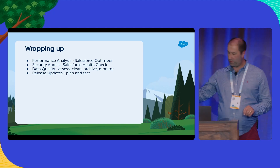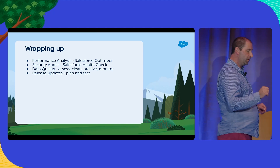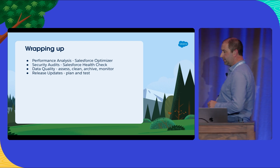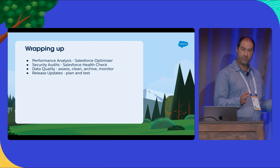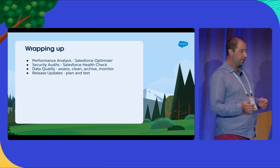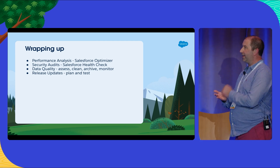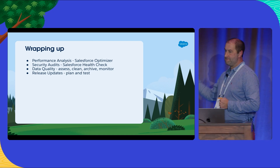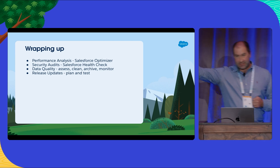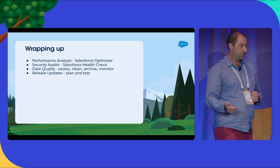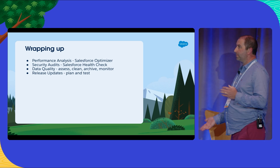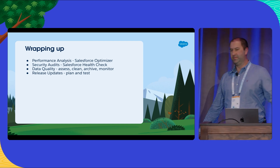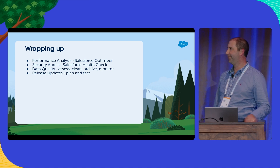To round it all out, the four areas we looked at: performance — where you've got the Salesforce Optimizer; security audits — the Salesforce Health Check. Two completely free options available in the setup menu. Use them regularly, keep on top of those scores and their output. Data quality has never been more important — all the business decisions being taken on the basis of the data in your org are going to be impacted by that. And release updates — plan and test them. Don't get caught out by things that become enforced having been optional for three years.